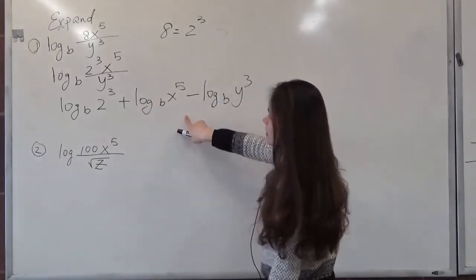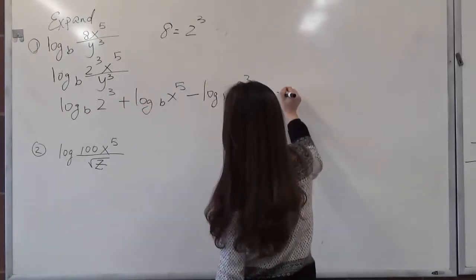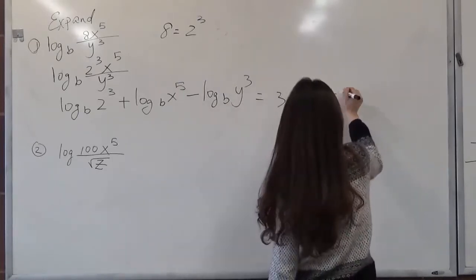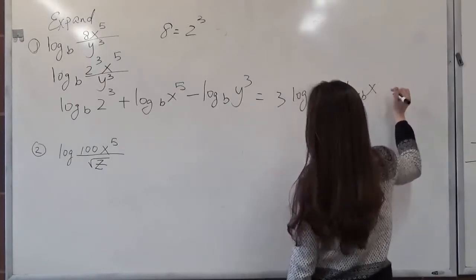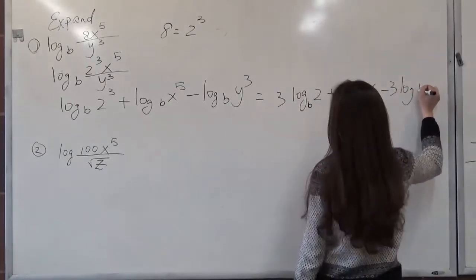We have one more step to go because of the power, so you have to use the power rule. You have 3 log b 2 plus 5 log b x minus 3 log b y.